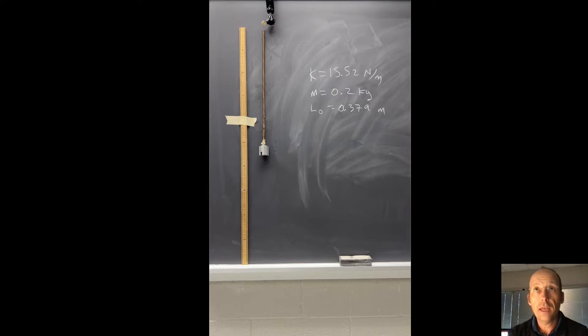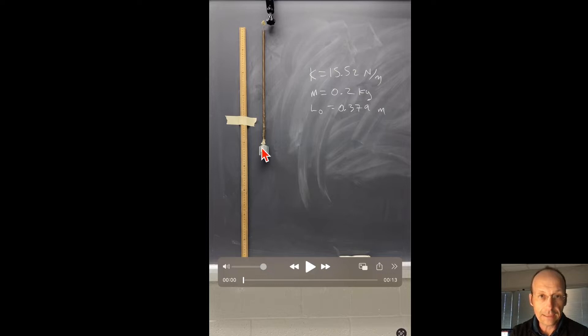Here I have a spring with a mass connected to it and it's hanging down here. I've already measured the spring constant. It's 15.5. This is a 200 gram mass. The length of the spring as it's not stretched is about 0.4. I re-measured it. I got 0.4.